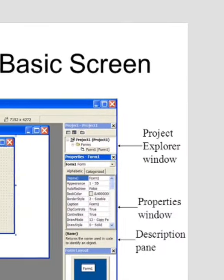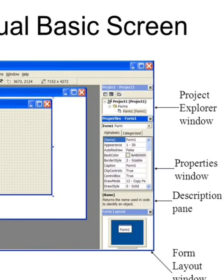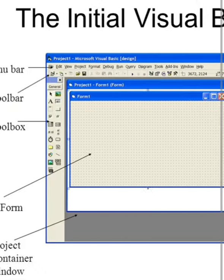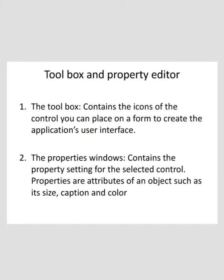First, we will see the Project Explorer. The project explorer displays the components of the project. Simple projects are made up of a single form. The project window is called the project explorer because it has the look of Windows Explorer. Now we will start with the toolbox. The toolbox contains the icons of the controls you can place on a form to create the application's user interface.